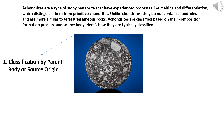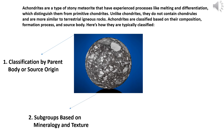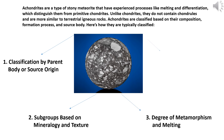Achondrites are classified by: (1) parent body or source origin, (2) subgroups based on mineralogy and texture, (3) degree of metamorphism and melting, and (4) unique groups.